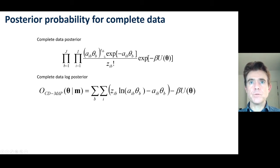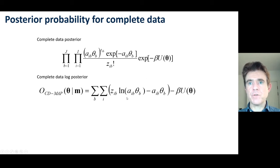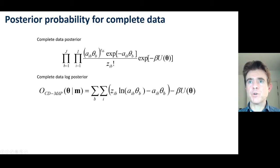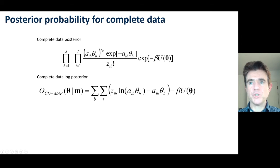When we take the log, the products go to summations, Z comes down the front of the log, the exponential disappears, and a constant term is eliminated since it won't affect the location of the maximum. The prior term goes to minus beta times the energy function u.